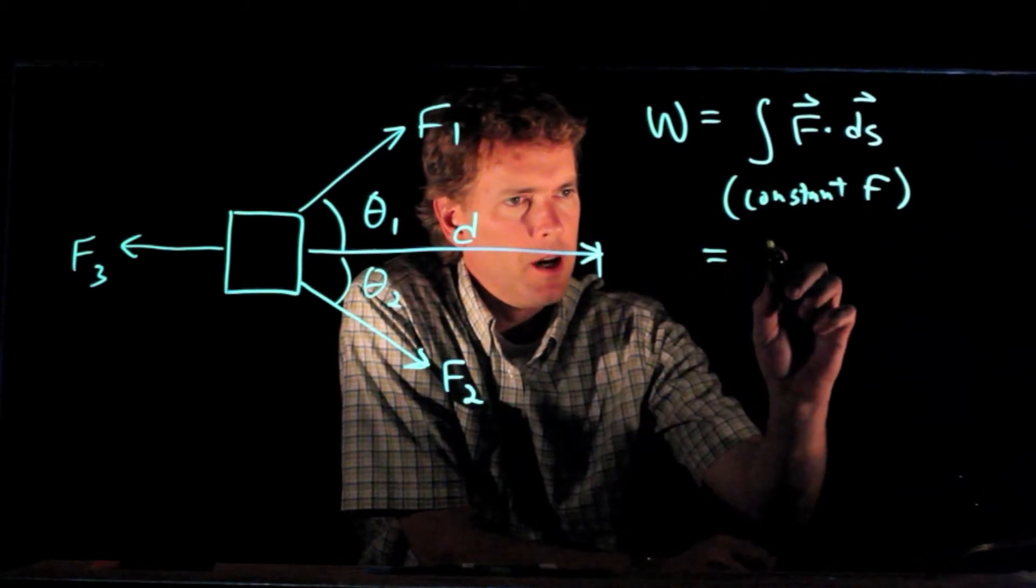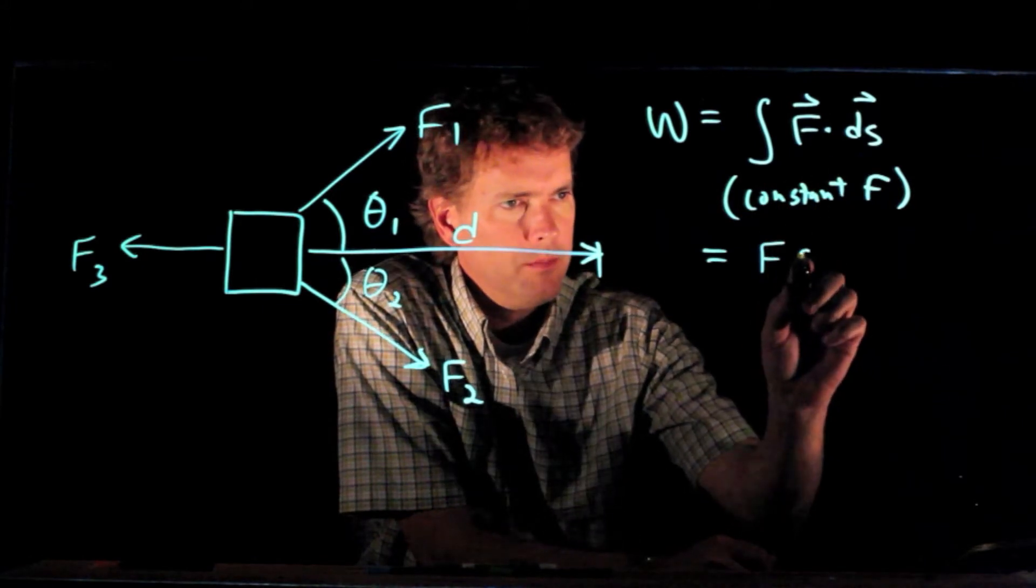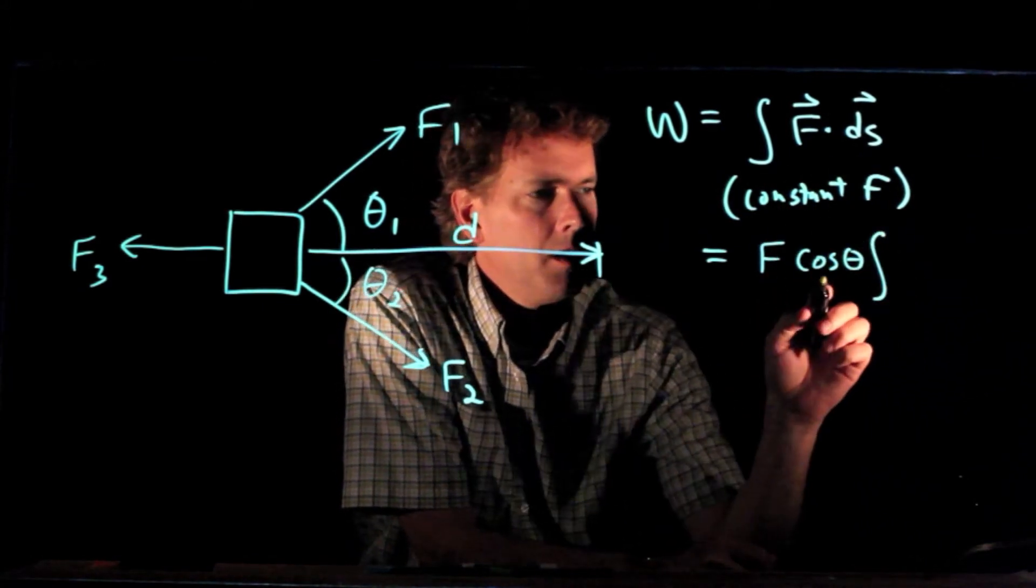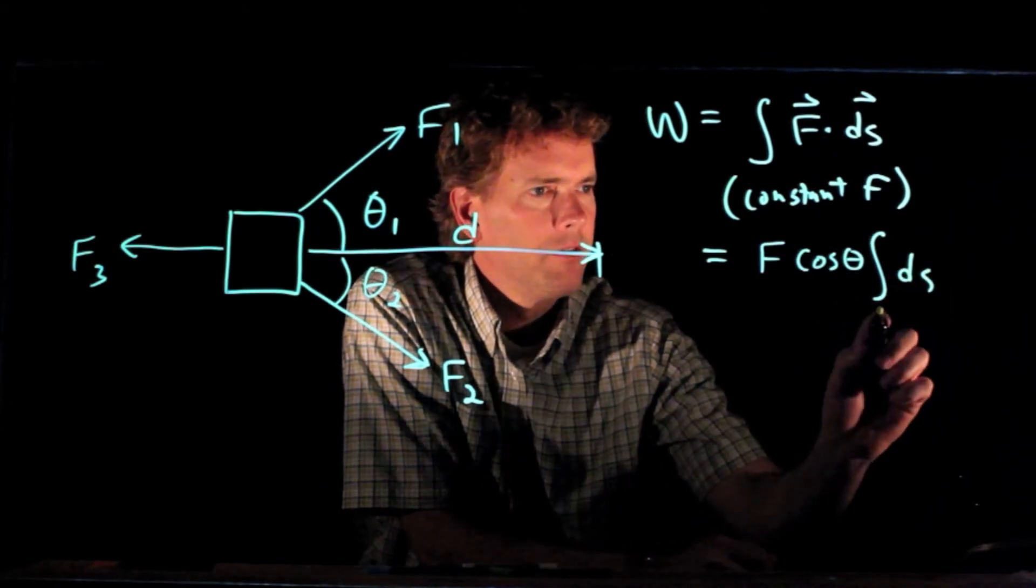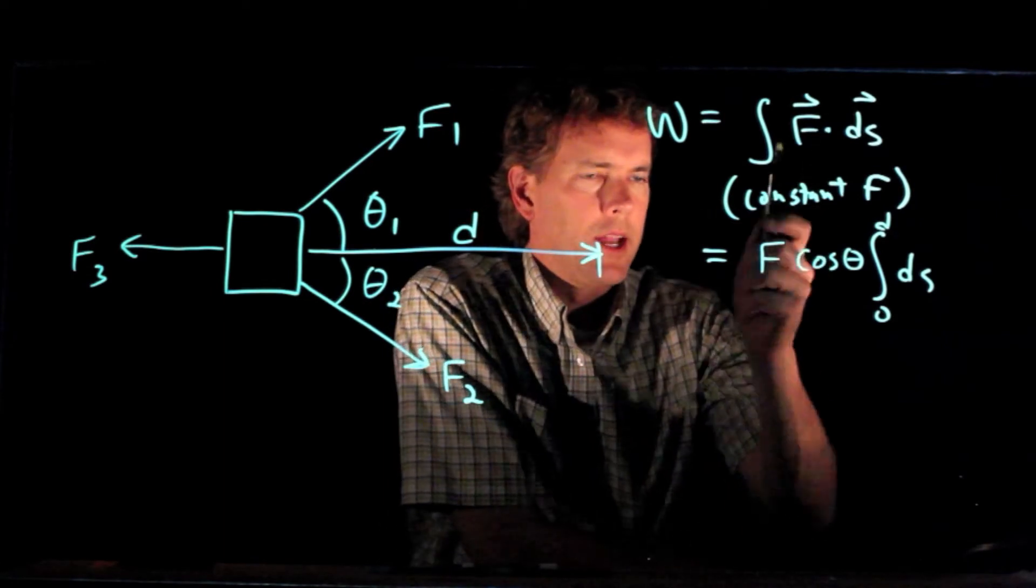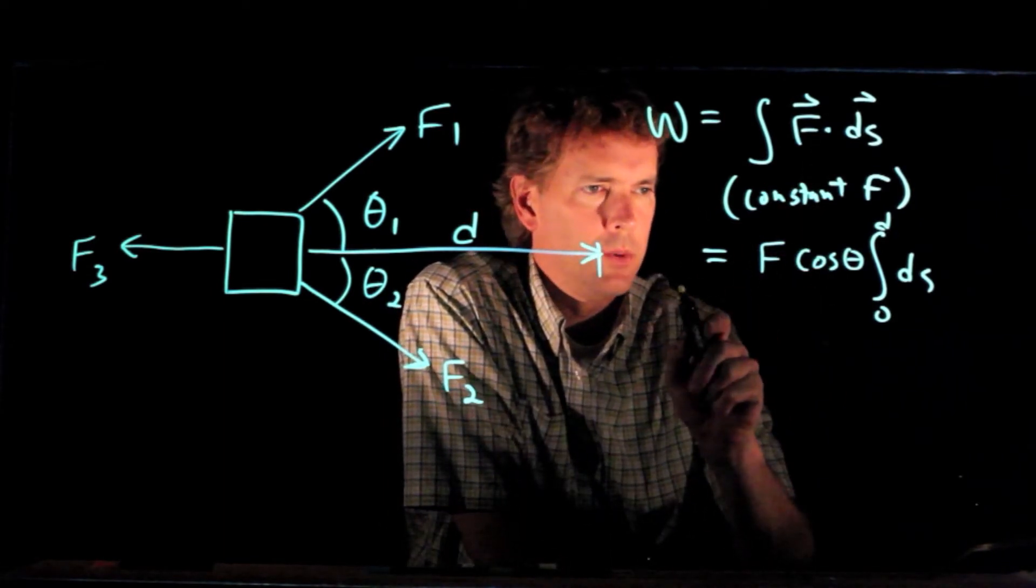And so this becomes F times cosine theta times the integral of ds from zero to d. Remember, the dot product there tells us that we have to include the cosine of the angle between those two.